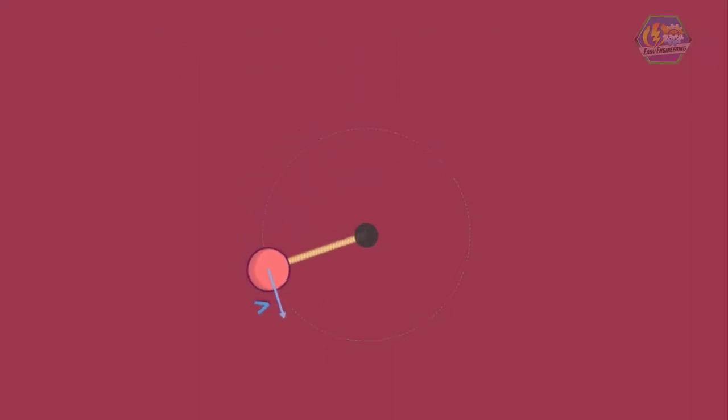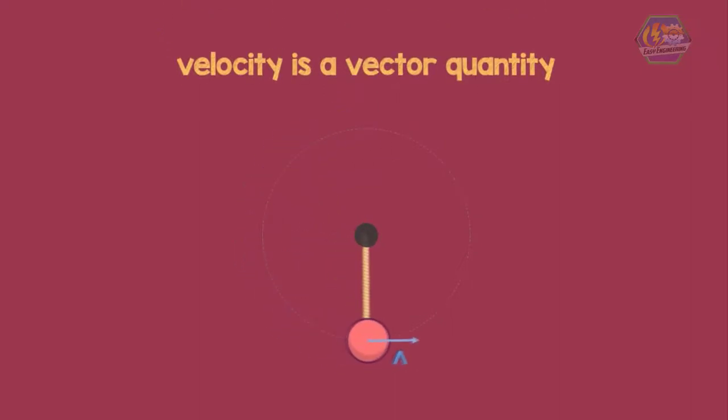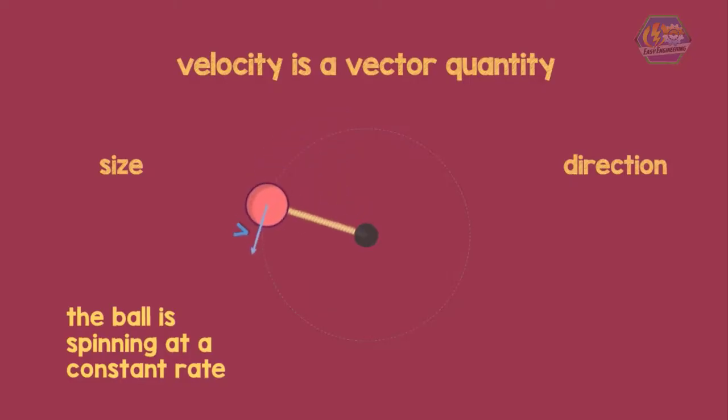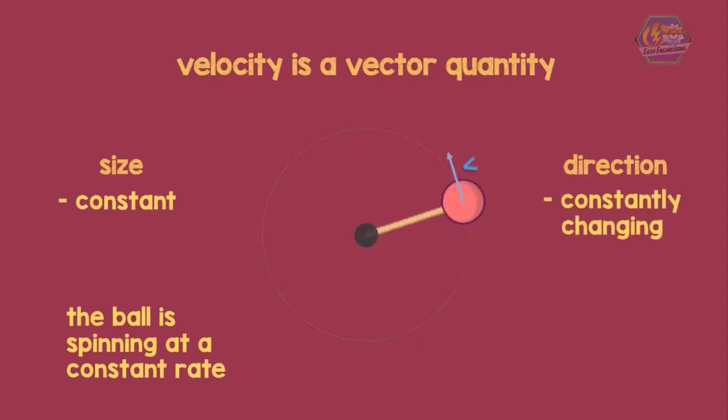As you know, a velocity is a vector quantity which means that it has a size and a direction. In this example, assume that the ball is spinning at a constant rate. We also know that the size of the ball is also constant. But since the direction is constantly changing, then we can say that the velocity is also changing.